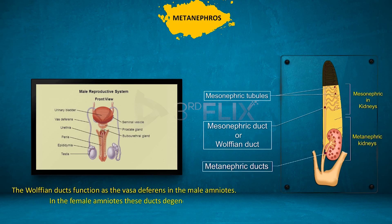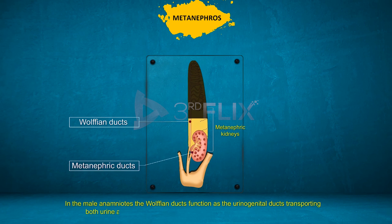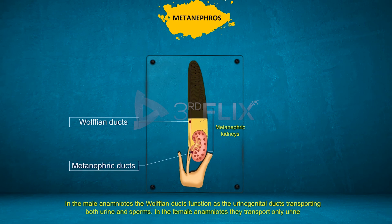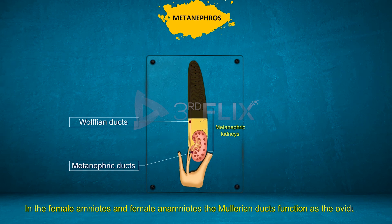In female amniotes, the Wolffian ducts degenerate. In male anamniotes, the Wolffian ducts function as the urinogenital ducts, transporting both urine and sperms. In female amniotes and female anamniotes, the Müllerian ducts function as the oviducts.